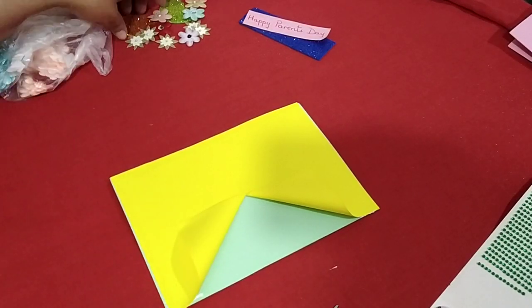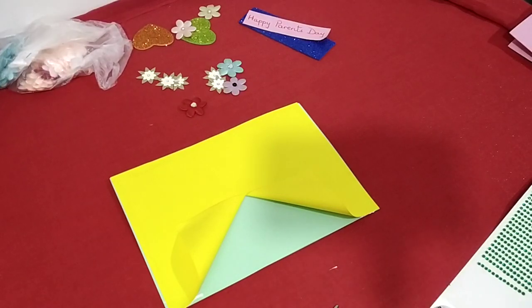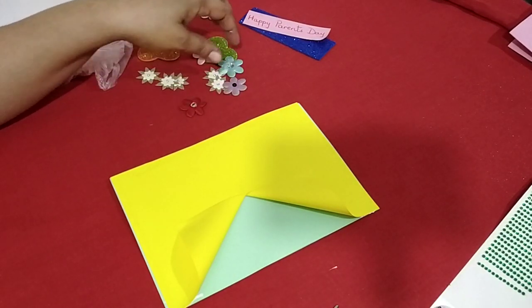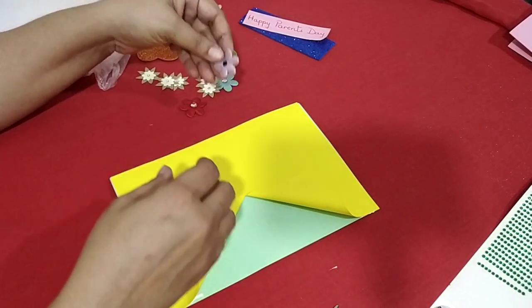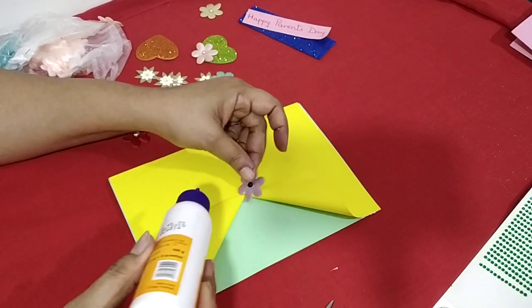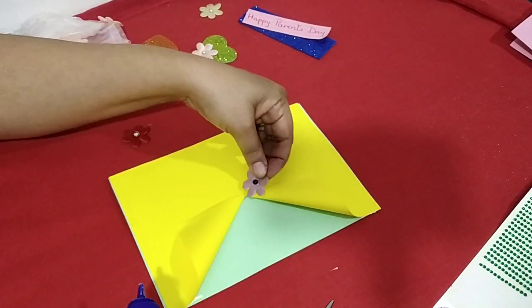Now I showed you some flowers which you have to keep ready. You can cut the flowers out of paper. If you have these flowers at home, you can use them. So now you take your flowers and you place them here like this, at this fold. Put a little glue and place it.